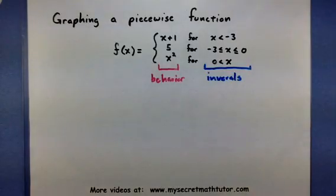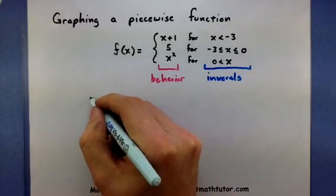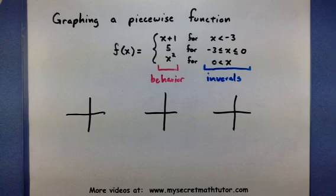These intervals tell us where it wants to act like these pieces. So now that we've identified those things, let's really focus a lot on the behavior. Since this piecewise function has one, two, three pieces in it, we will look at one, two, three separate graphs for the behavior.